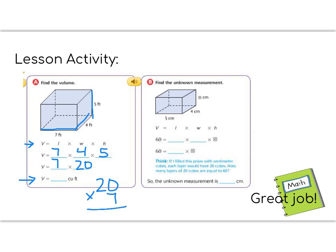In part B, we are being asked to find the unknown measurement, which if you can see here is the height. So let's use what we do know in order to find what we don't know. We know the length, that's 5. And we know the width, that's 4. And we know that 5 times 4 is 20.